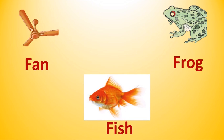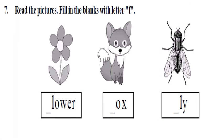Children, read the picture, fill in the blanks with letter F. Flower: F-L-O-W-E-R, flower. And next picture, fox: F-O-X, fox. And next one, fly: F-L-Y, fly.